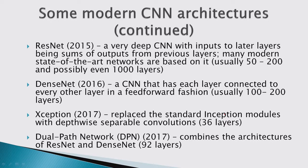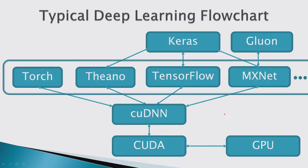Two more architectures winners used: Xception, which replaced standard inception modules with depth-wise separable convolutions; and Dual Path Network, which combines the ResNet and DenseNet architectures in one network. Hopefully this wasn't too boring — I wanted to include it because most winners used one of those configurations.